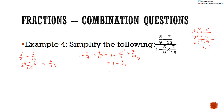Now we work out the subtraction: 1 minus 7 over 27. The LCM is 27. 1 take away zero is 1, and we have 0 minus 7. We take 1 from the 1 to leave 0, and this 1 as a fraction is equal to 27 over 27. So we have 27 take away 7 to give 0 whole number and 20 over 27.